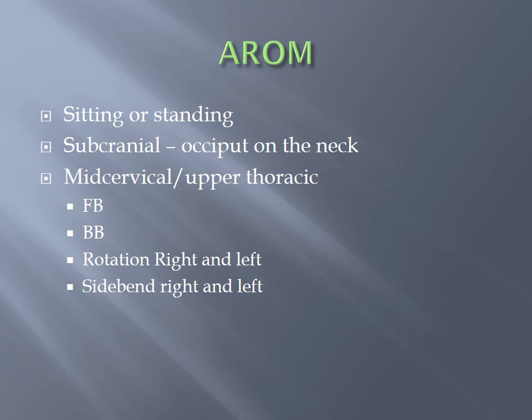Cervical spine active range of motion can be done in sitting or standing. We look at subcranial motion — the motion of the occiput on the neck — looking for slight tilts, side bending, and forward and backward bending of this region. Mid-cervical and upper thoracic motion should be evaluated as well, including forward bending, backward bending, rotation in both directions, and side bending in both directions.